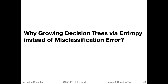So the question is: why are we growing decision trees using entropy instead of the misclassification error? This is also true for Gini, not only entropy. In the examples I'm showing in this video, I will only focus on entropy, but the exact same concept applies also to Gini.